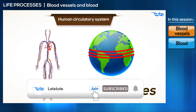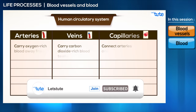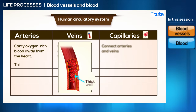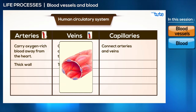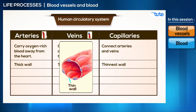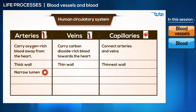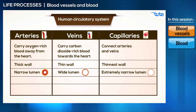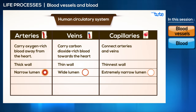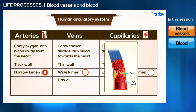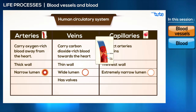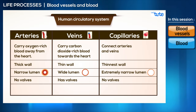Let's compare some features of all three blood vessels. Arteries have the thickest wall — to withstand the pressure of blood pumped by the heart. Veins are thin-walled, and capillaries are the thinnest. Regarding the lumen, arteries have a narrow lumen, veins have a comparatively wide lumen, and capillaries have an extremely narrow lumen — just a single cell wide. Veins carry blood towards the heart, and to prevent backward flow, they have valves that ensure unidirectional blood flow. Arteries and capillaries do not have valves.